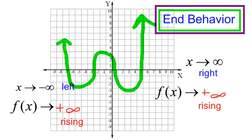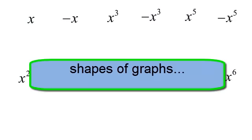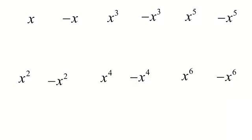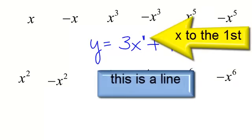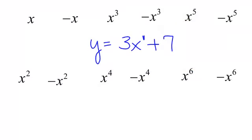So in this picture, the end behavior — the end of my graph. It's just end behavior: how is it behaving at the end? It's rising on the left and the right. Let's talk about just the general shape of graphs. If I have X to the first — in other words, if I had Y equals 3X plus 7 — X to the first is my highest degree. That's a line and X is positive, so I know that it's going up. It has a positive slope.